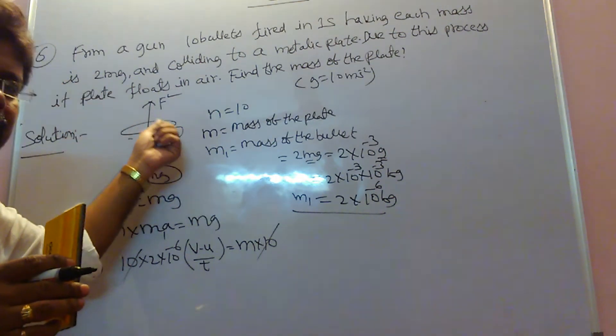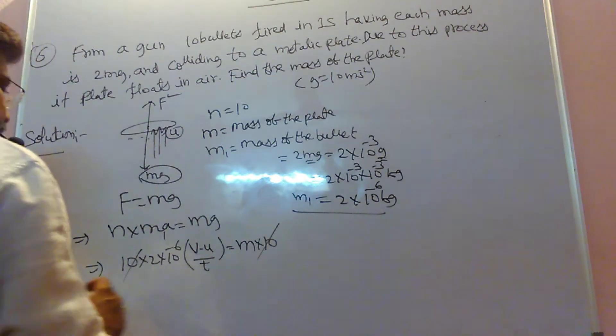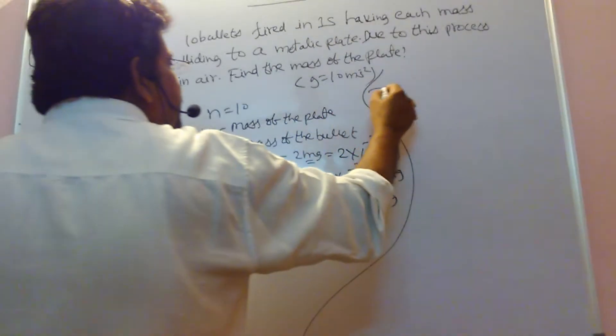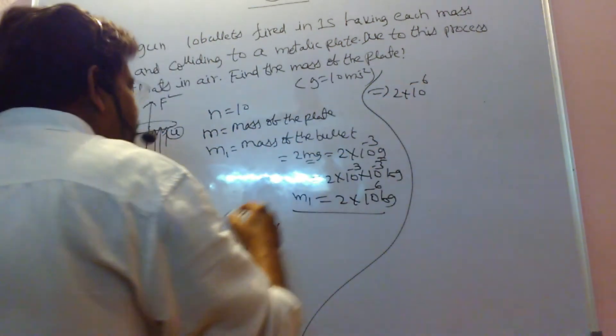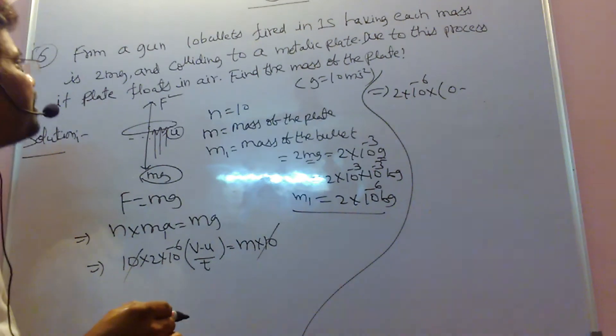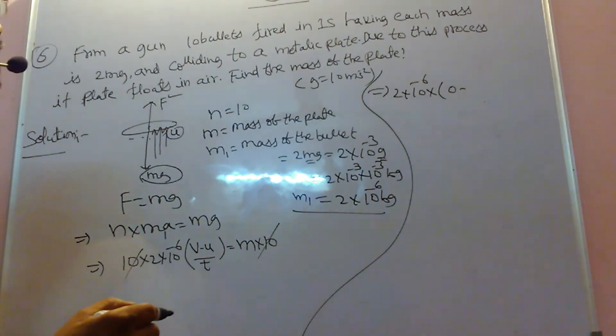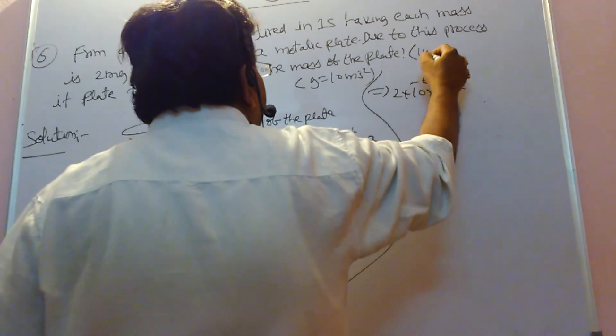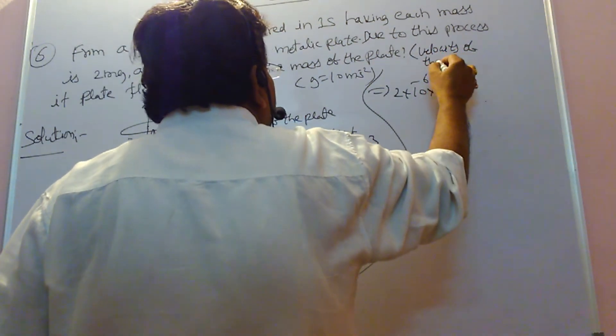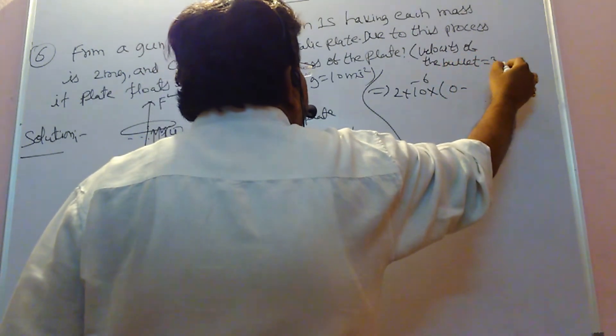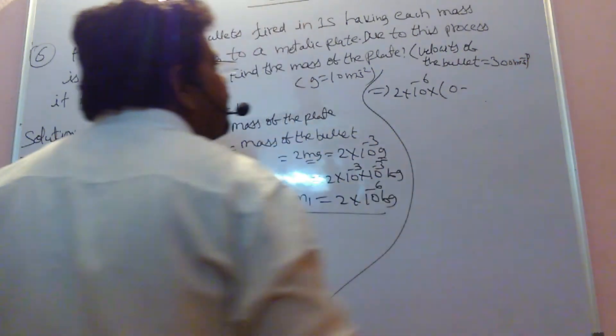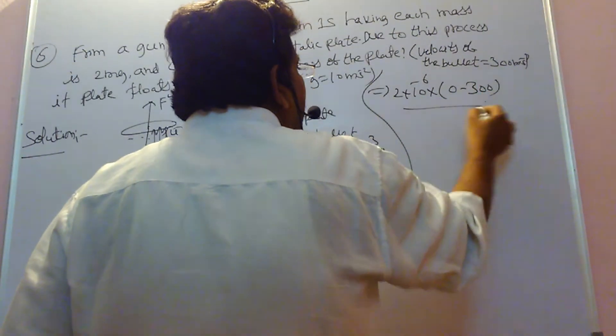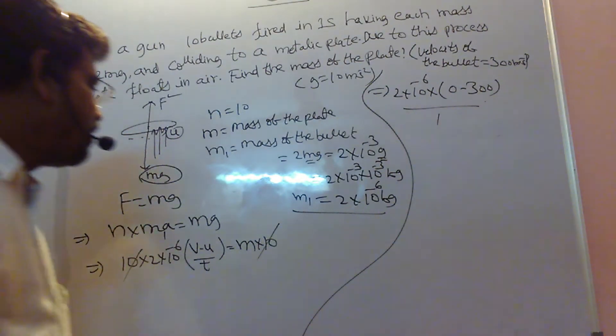When bullet is colliding with U velocity, all are coming to rest only. So final velocity is 0. Here 2 into 10 power minus 6 into final velocity I am taking 0. What is the initial velocity? 2 milligram colliding with velocity. The colliding velocity we don't know, so you take as 300 meter per second, velocity of the bullet. Of colliding, coming to rest only. Before collision, velocity is 300 meter per second. By time, 1 second. In 1 second only all these things happen. That equals to small m.